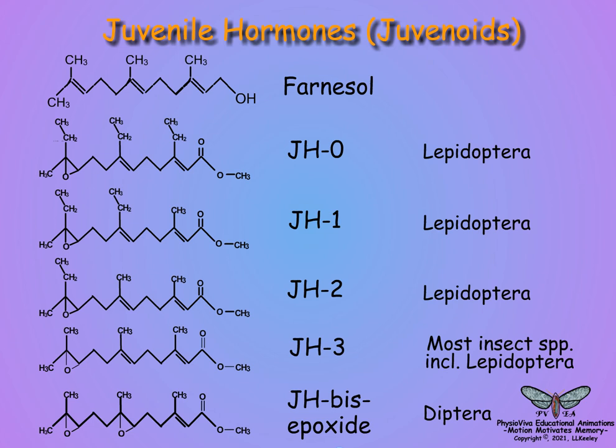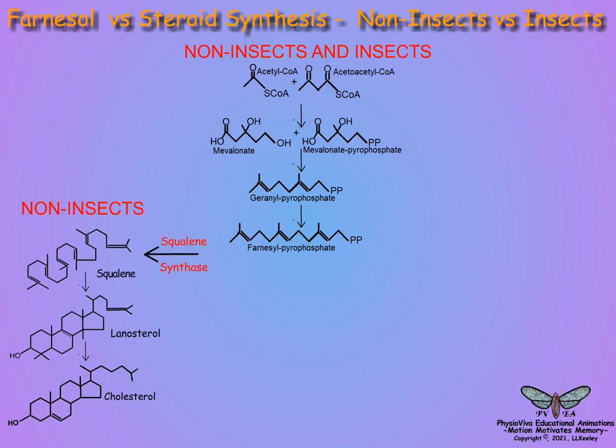Farnesol precursors are intermediates in the pathway to steroid ring formation in non-insect animal species. Insects, like other animals, can convert acetate into farnesol, but insects lack squalene synthase that is essential to condense farnesol precursors into squalene. Squalene is the precursor to the steroid ring nucleus of sterols. Instead, insects synthesize farnesol and then convert farnesol to juvenile hormones.